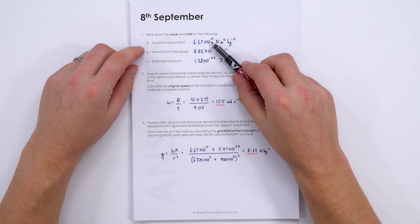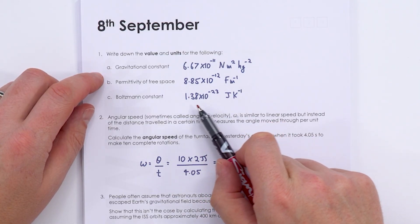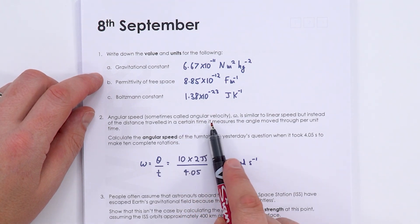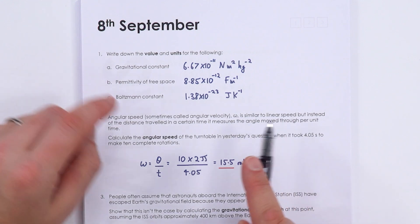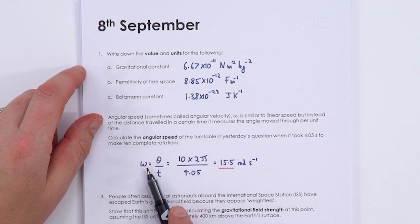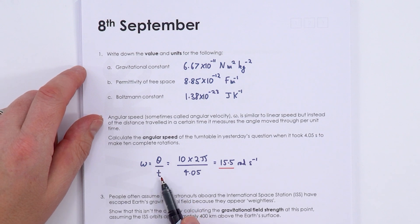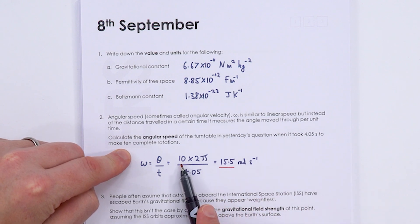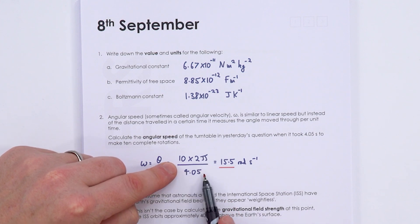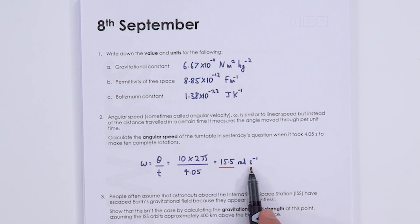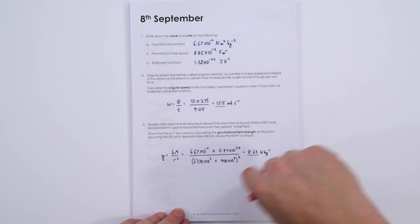On the 8th, we revisit the gravitational constant, permittivity of free space, and the Boltzmann constant: 1.38 × 10⁻²³. Angular speed (or angular velocity) is the rate of change of angle with time — measured in rad/s. For the turntable that completed 10 rotations in 4.05 s: ω = (10 × 2π) / 4.05 = 15.5 rad/s.